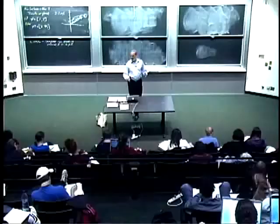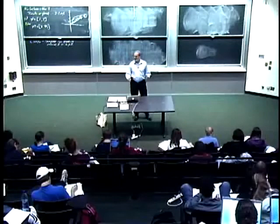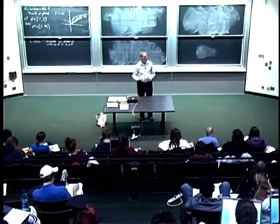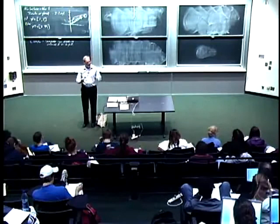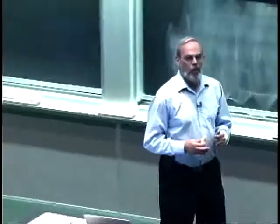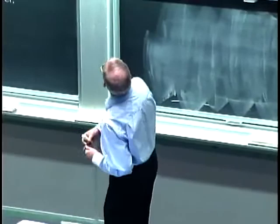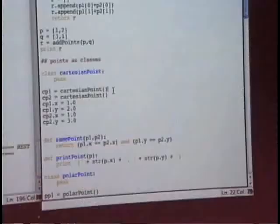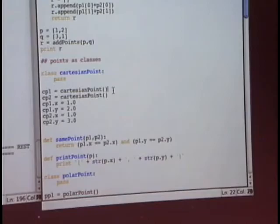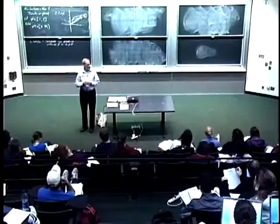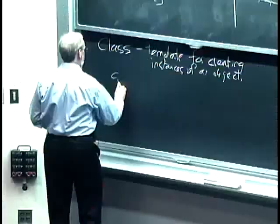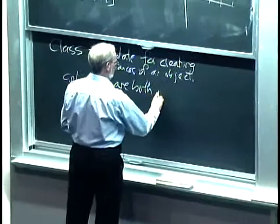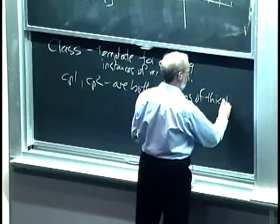Right now it's a really dumb template — it's just got the keyword class and a name, and the body is just pass, Python's way of saying there's an empty body. But the idea is that class is a template for creating instances. I call the class just like a function: CartesianPoint() creates CP1, and calling it again creates CP2 — two separate instances of this type.